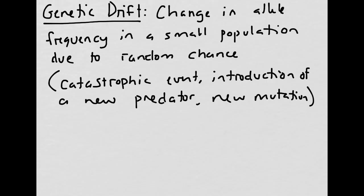As we discussed in our last screencast, genetic drift is actually a really important feature in evolution and one of the major drivers. Essentially it's just the change in allele frequency in a population because of random chance — whether from a new mutation, a new predator introduced that targets certain traits, or a catastrophic event. All of these things are going to be much more heavily impacted if the population is really small.